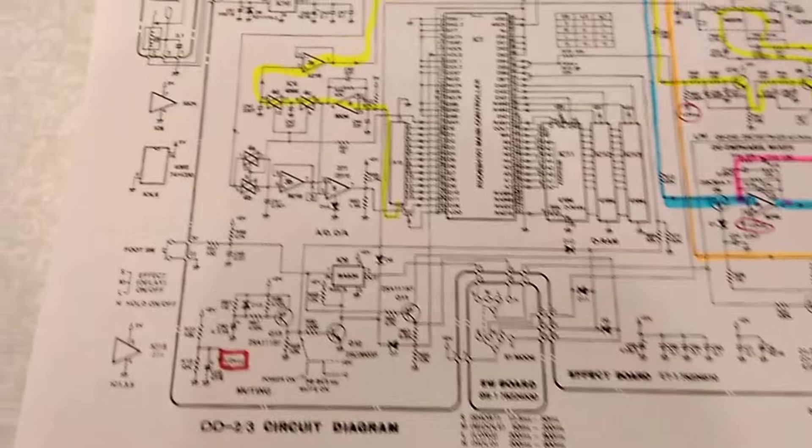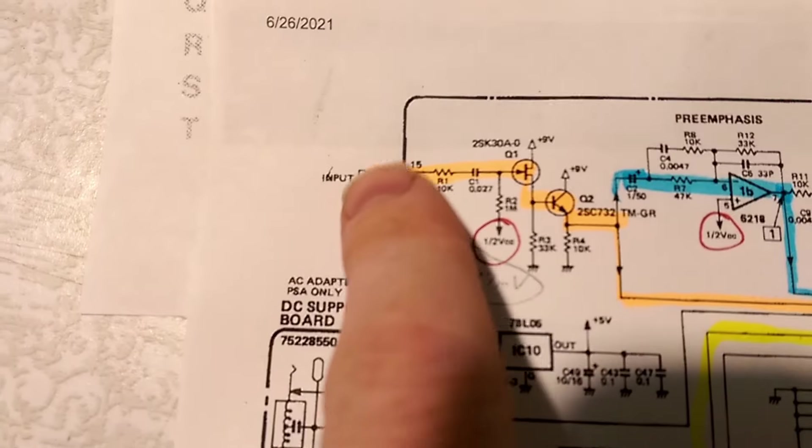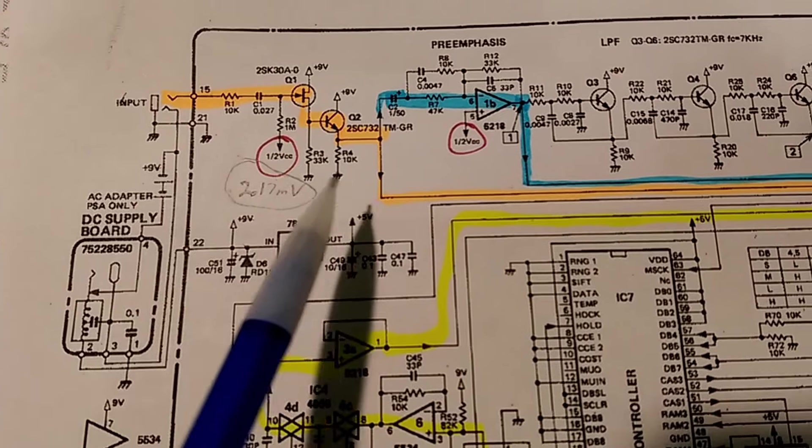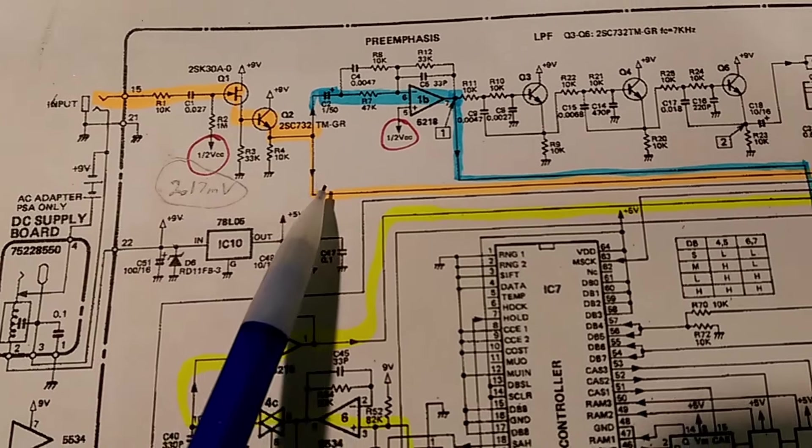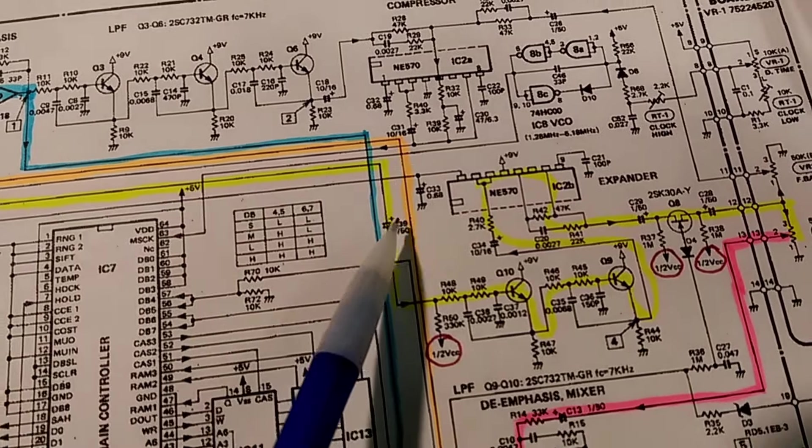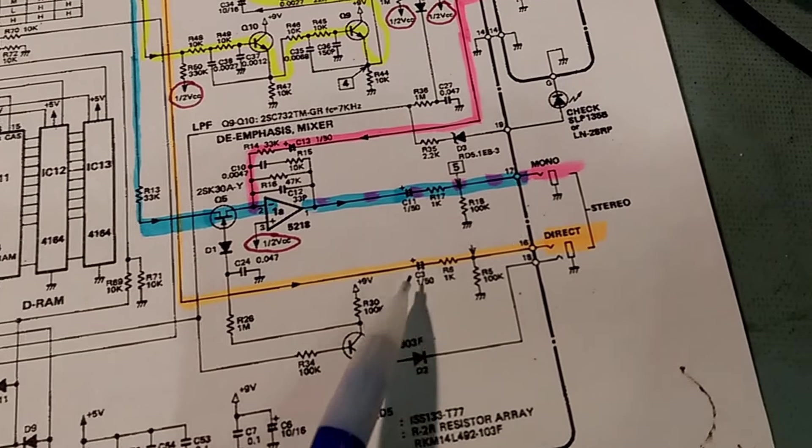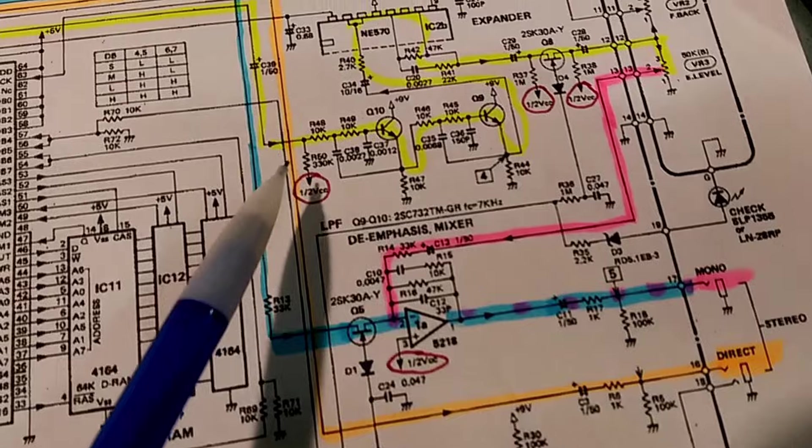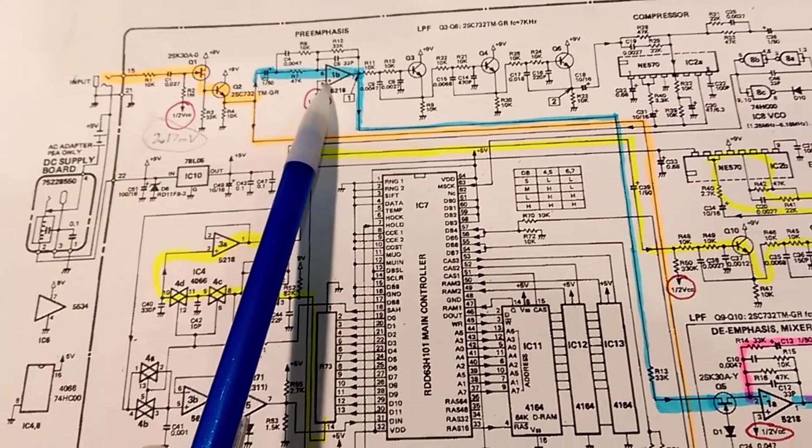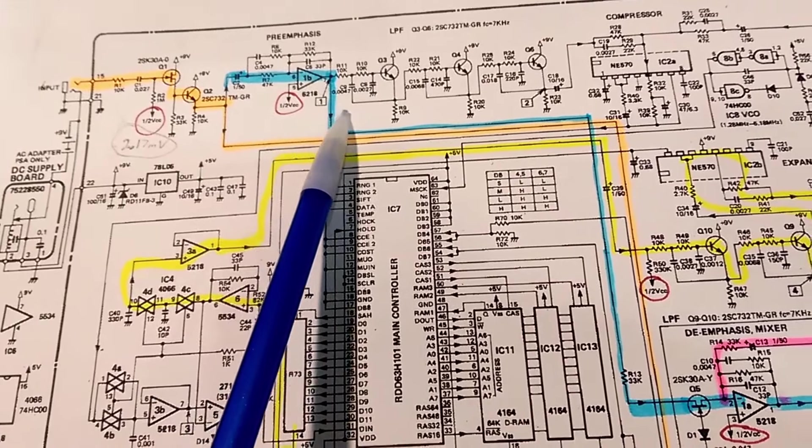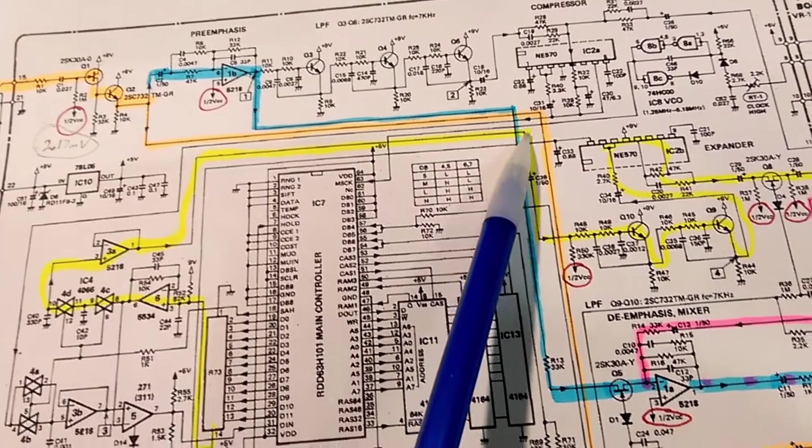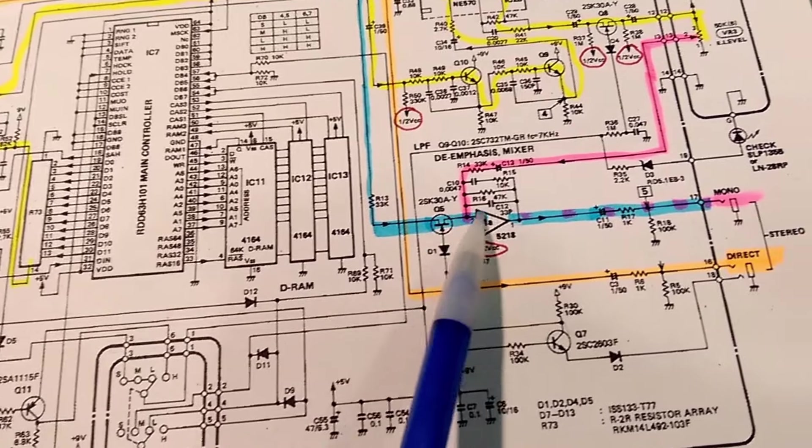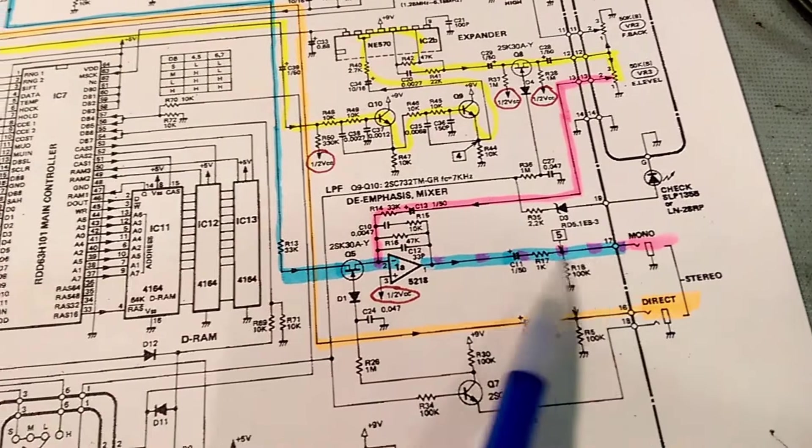And here's the schematic, input here. The dry signal follows this orange path all the way down here, then it goes to the direct out. That appeared to sound okay. And this blue path would be also a dry signal here. It might be when you have the pedal on the bypass mode, it could feed the dry signal through.